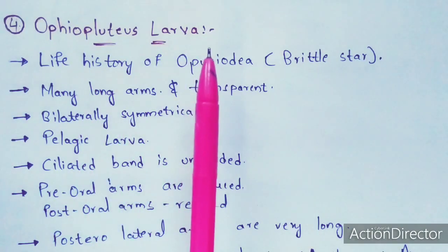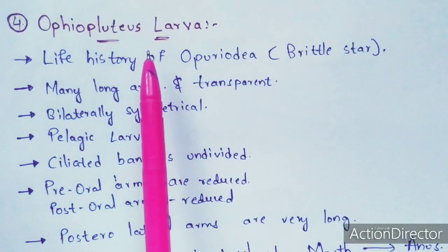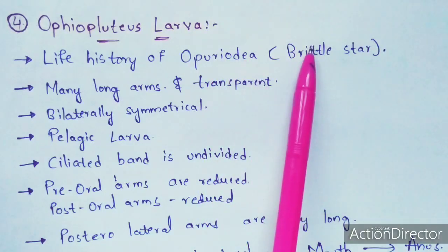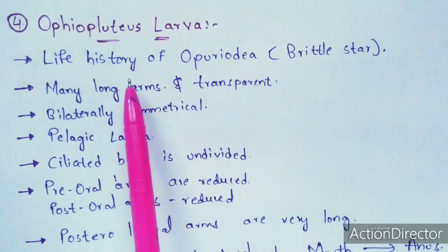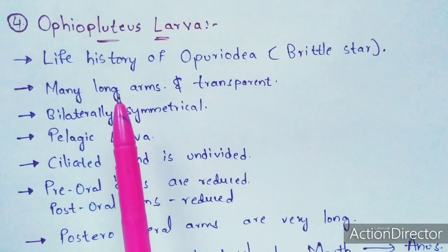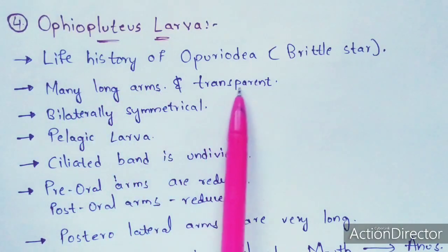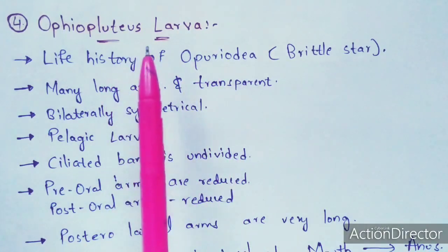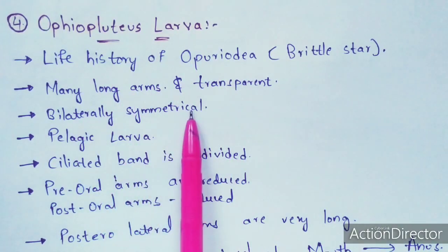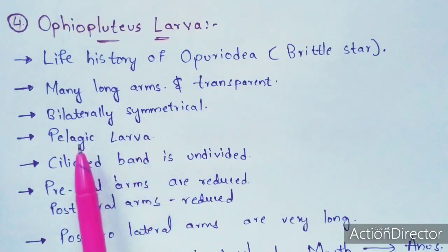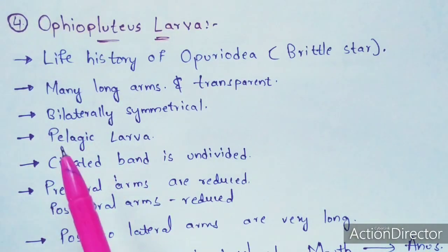Coming to the fourth form, the ophiopluteus larva. This ophiopluteus larva belongs to the life history of Ophiuroidea, commonly called the brittle star. Many long arms are present. The body of this ophiopluteus larva is transparent, and it is bilaterally symmetrical. It is a pelagic larva because it exhibits the property of pelagic, which I already explained in the previous video.